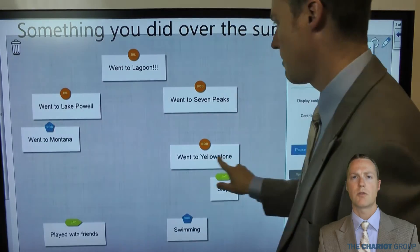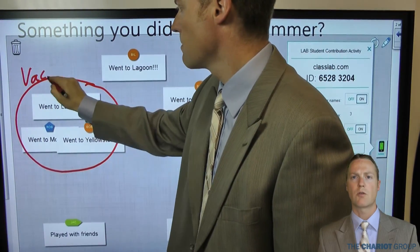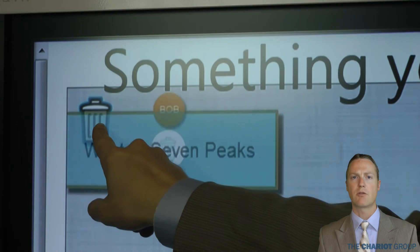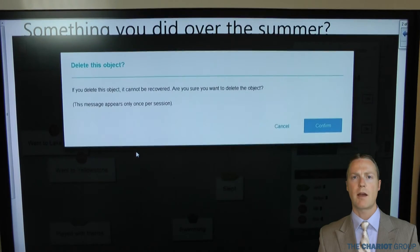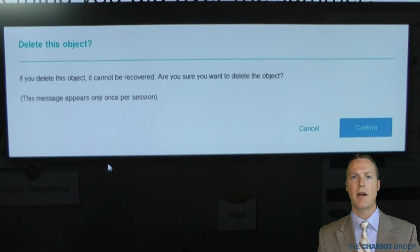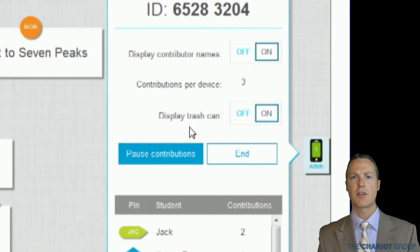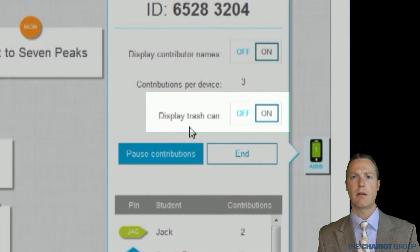All of the contributions can be moved around. This allows the teacher to be able to group or sort the contributions. Any of the contributions can be deleted by dragging it to the trash can in the top left-hand corner. The first time you drag a contribution to the trash, it will ask you to confirm the delete. You need to only do this once per session. If you don't want the trash can to appear, either to have more space or so you don't accidentally delete something, you can choose not to display the trash can in the activity control panel.